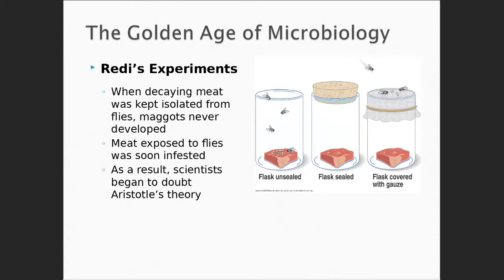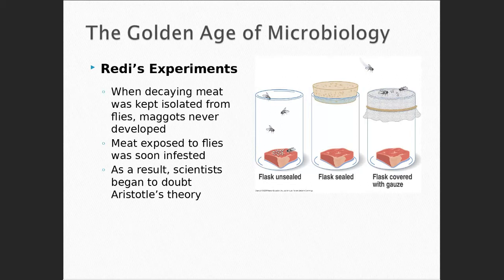And what about the algae — how do we classify them? Pigmentation. The type of pigments that they store. There are the blue-green algae, the green algae, the yellow algae, the brown algae, the red algae. Those are possible questions on the exam — I will ask you what characteristic is used to classify the algae, and you would select pigments.